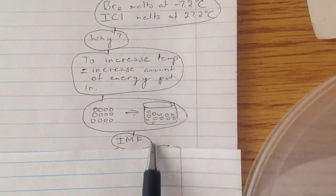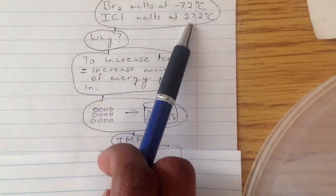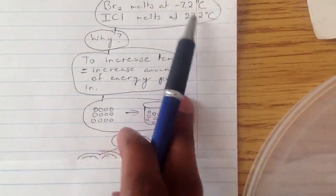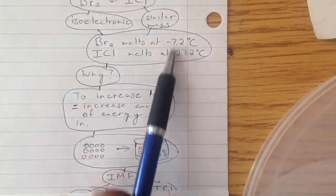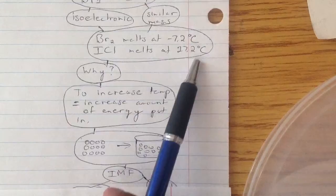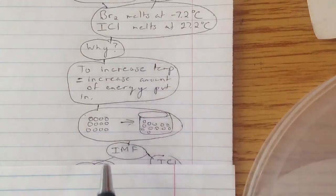So intermolecular forces. But once again, there's still this similar mass. So that means similar mass and isoelectronic, but they're melting at different degrees. So intermolecular forces have to explain this.